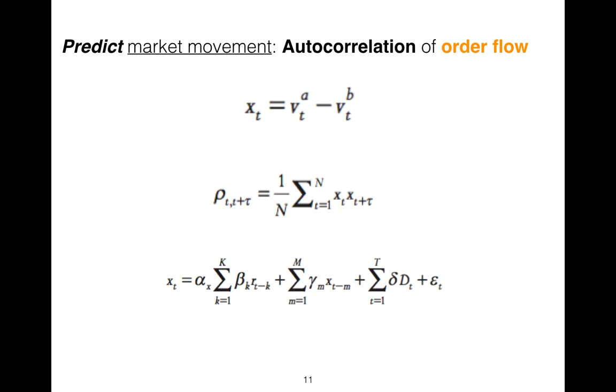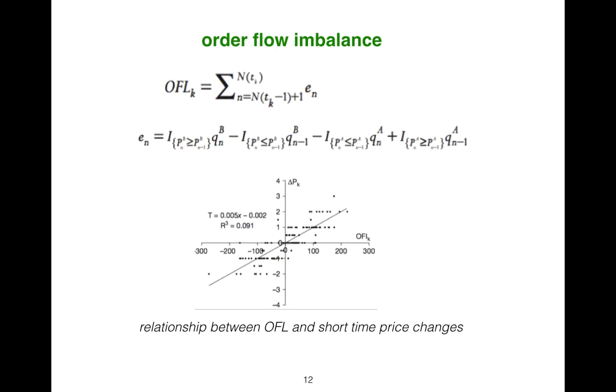If it belongs to a set, it is one; if it does not belong to the set, it is zero. It is the standard indicator function. Order flow imbalance has a linear relationship with short-time price changes.